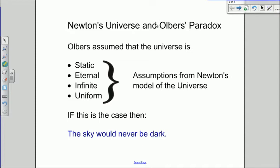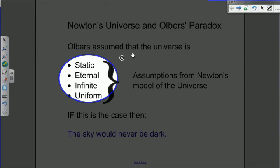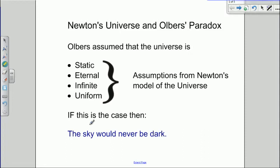These assumptions were what Olbers had to work with, and they drew up a really surprising logical paradox when you looked at the consequences. The paradox was that if these four assumptions are correct, then the sky would never be dark. The sky at all times, day and night, would be as bright as the surface of a star. We're going to look at the reasoning that led to that conclusion.